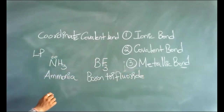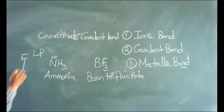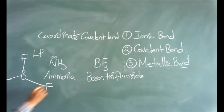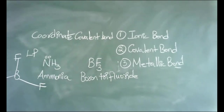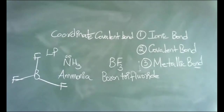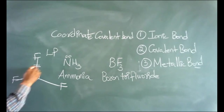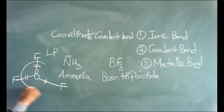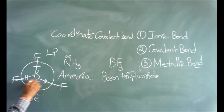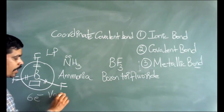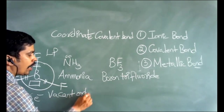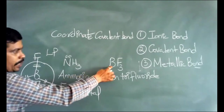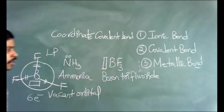In BF3, the central atom boron is having three bonds. Every bond contains two electrons, so the central atom has six electrons — not eight. Therefore the octet is incomplete and the central atom has one vacant orbital. So in BF3, boron has one vacant orbital, while ammonia's nitrogen has one lone pair.